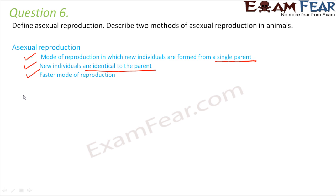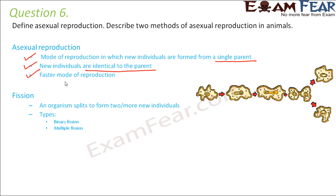Asexual reproduction is a faster mode of reproduction as compared to the sexual mode, because not many factors are involved. The organism simply breaks to form more organisms, so the rate of reproduction is quite fast. The first method is fission, where an organism splits to form two or more individuals.